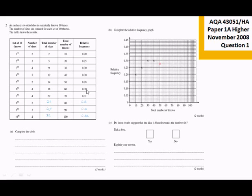And then after 60 throws, the relative frequency was 0.3. So we've got a plot 60 against a relative frequency of 0.3. So let's just do that. And then after 70 throws, the relative frequency was 0.31. So we plot that. And then after 80 throws, it went down to 0.3 again. And then it was 0.3 after 90 throws. And then it was 0.31 after 100 throws.